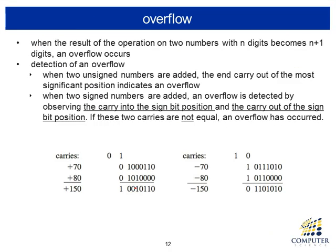Overflow condition means we are working with numbers of N digits, and if the operation result requires N+1 digits, it cannot be represented — that is called overflow. For two unsigned numbers being added, if a carry is generated out of the most significant position, that clearly indicates overflow. For two signed numbers where both are positive, we can also get an overflow condition.